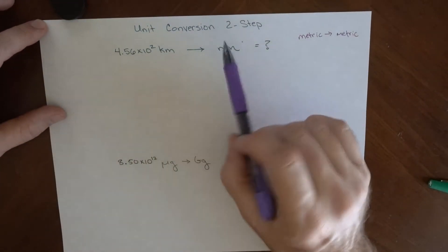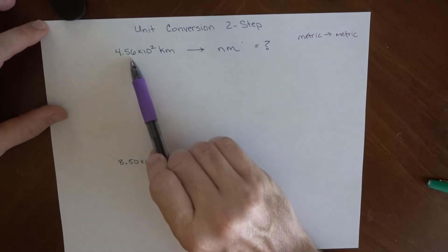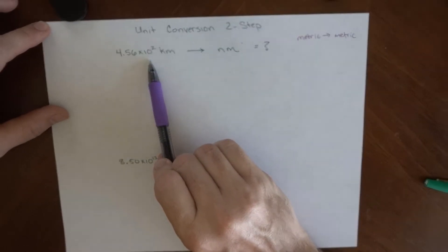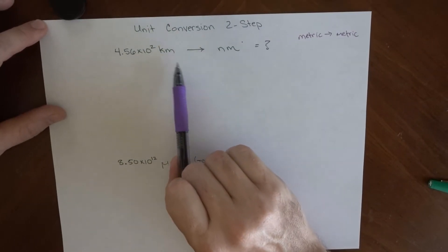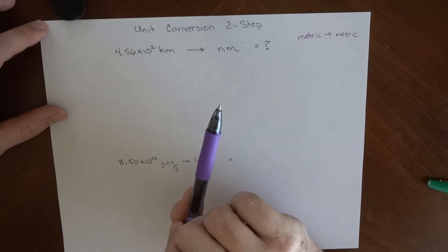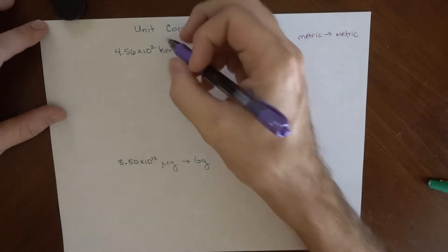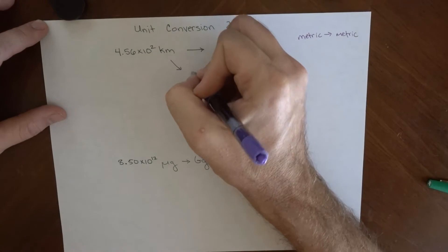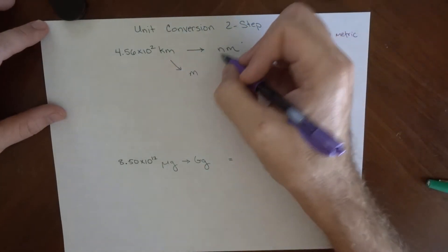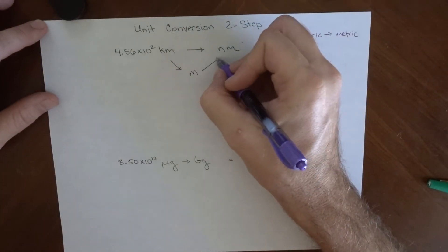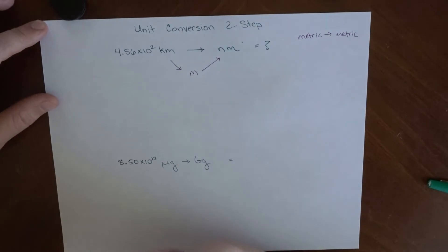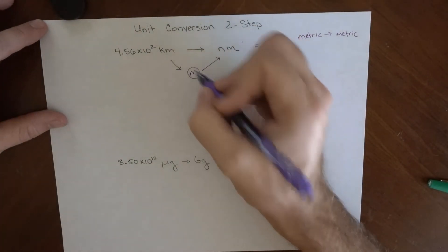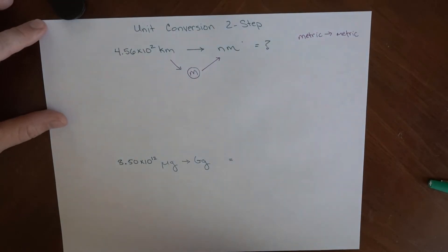The reason I do this in two steps, because looking at this, let's say 4.562 times 10 to the second kilometers to nanometers, I don't know a kilometer to nanometer conversion. What I do know is I know a kilometer to meter conversion, and I know there's a conversion between meters and nanometers, which means I'm going to need to do this in a couple of steps and use an intermediate sort of base unit to go between the two.